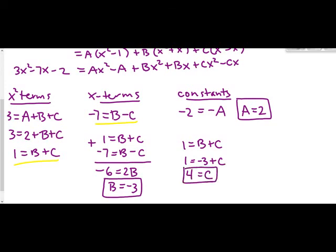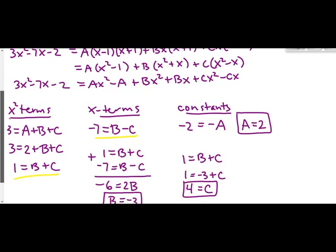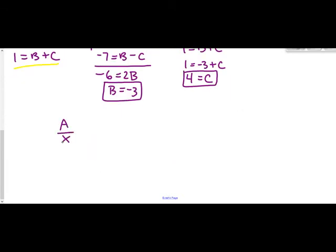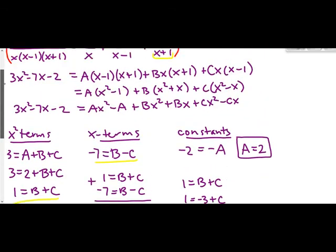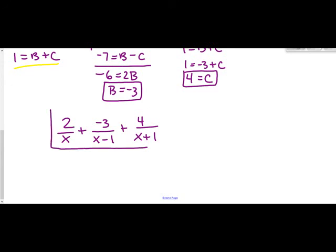Now substitute A, B, and C back into the fractions. A over x = 2/x. B over (x − 1) = −3/(x − 1). C over (x + 1) = 4/(x + 1). So the final answer is 2/x − 3/(x − 1) + 4/(x + 1).